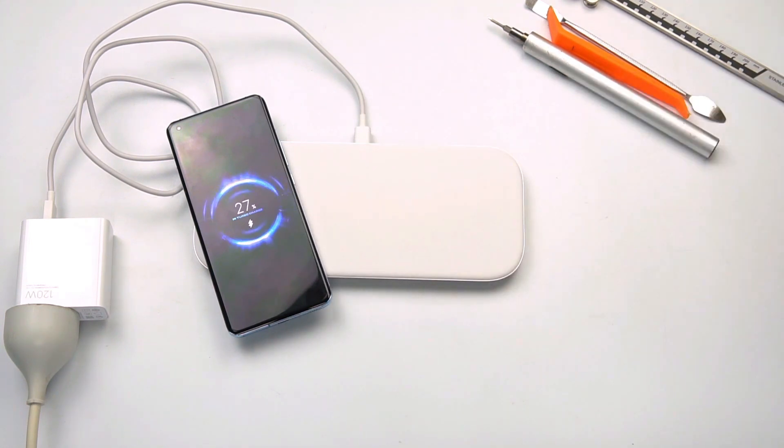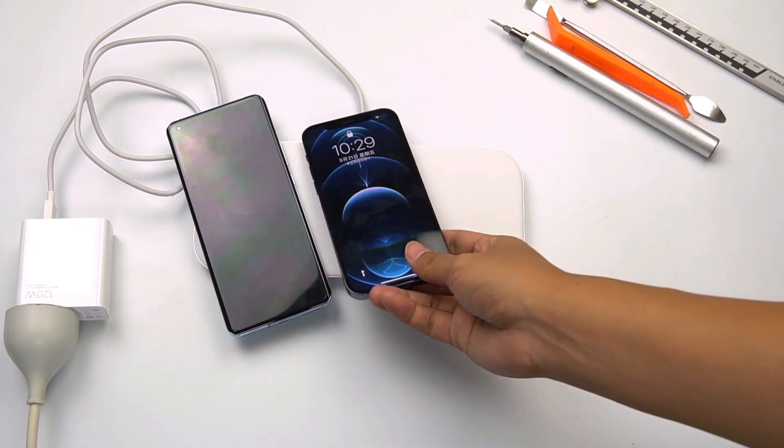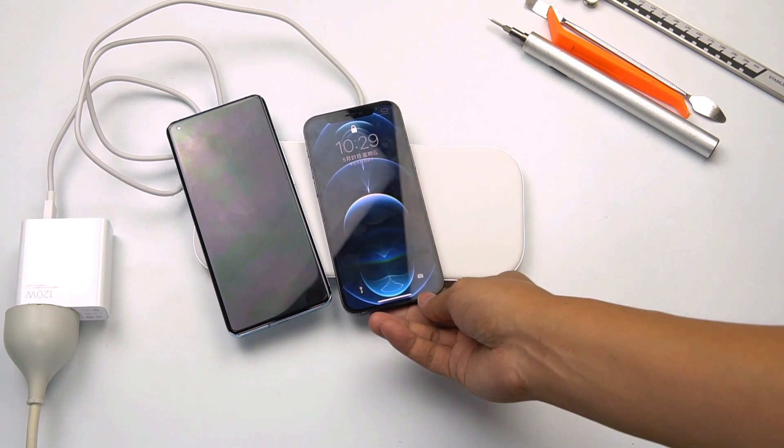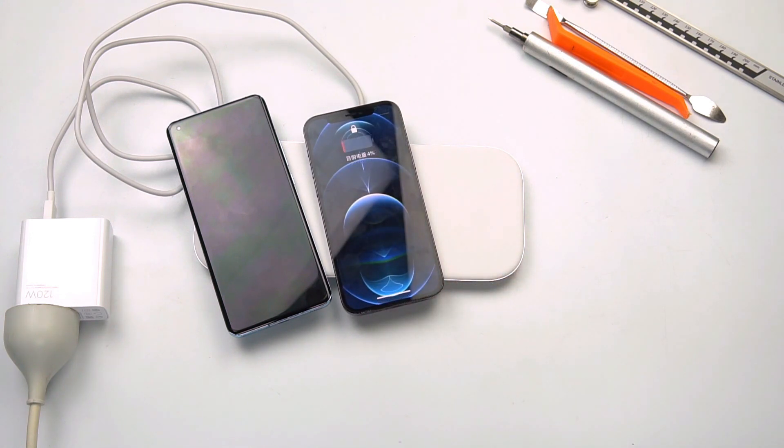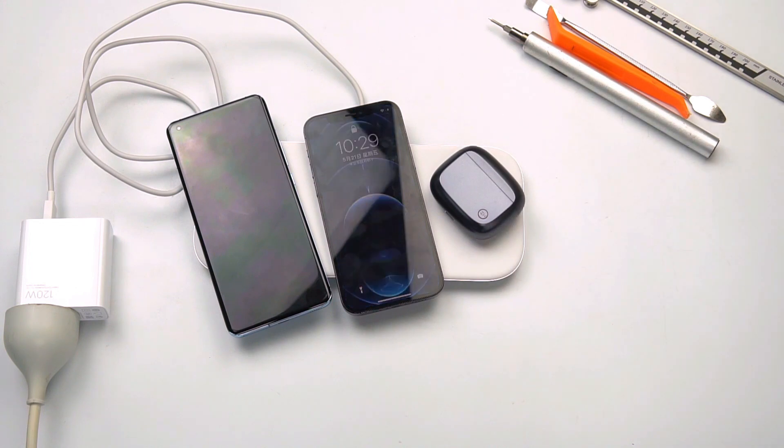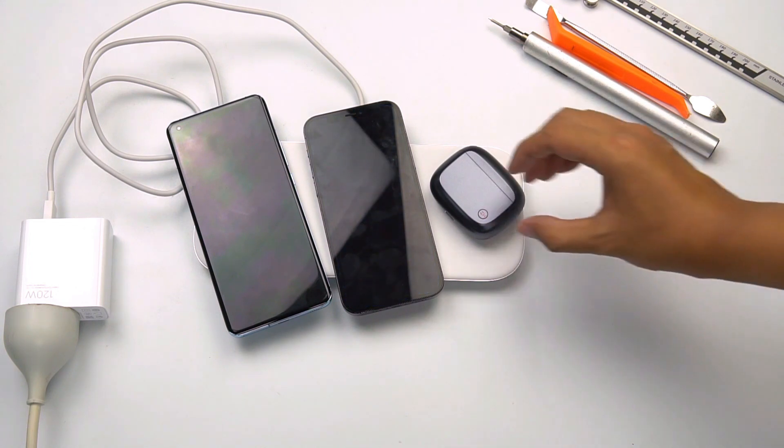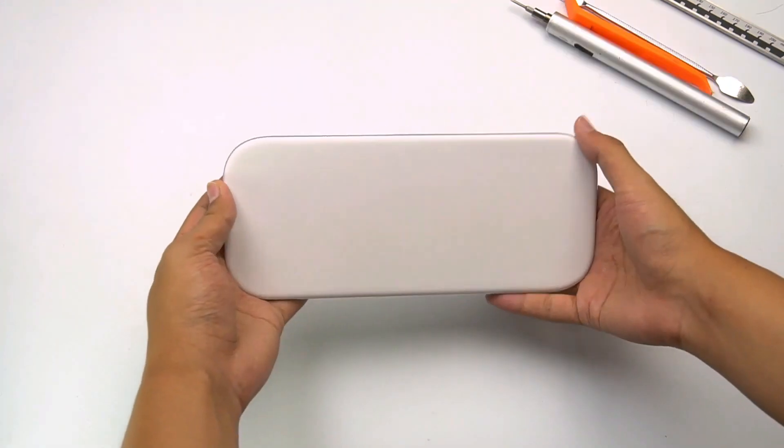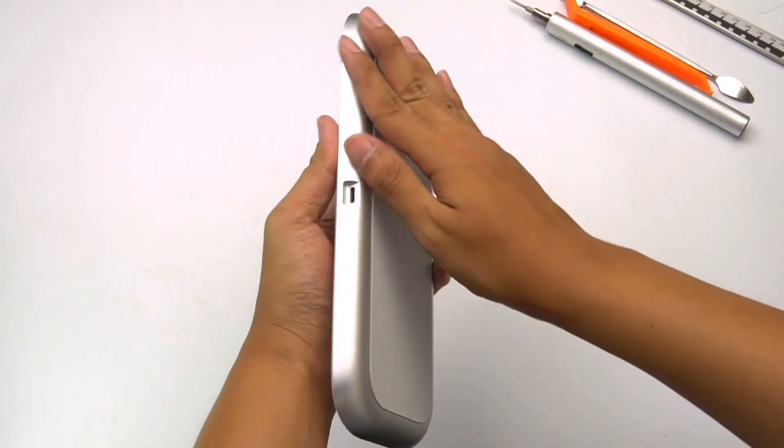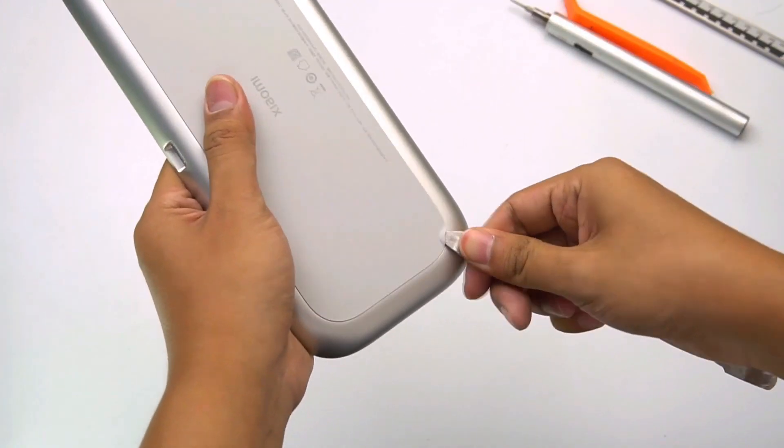And then let's put an iPhone next to it. Perfectly working. And put the TWS headphones next to iPhone. Perfectly working. Okay, time's up. Let's tear this down to see what's inside.